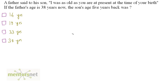What did the father say to his son? I was as old as you are at present at the time of your birth, and the father is 38 years old. So, 38 minus the son's age x is equal to x. At present the father is 38 years, so 38 minus the present age of the son will give you the present age of the son.